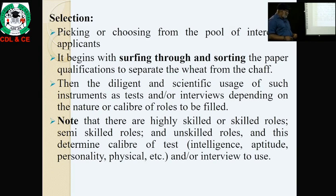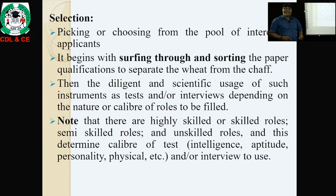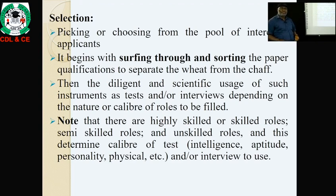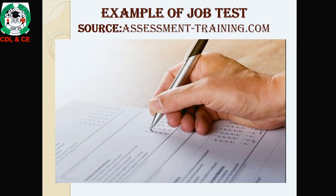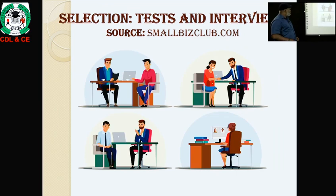Depending on the caliber of the role, the organization can decide to employ scientific methods such as tests and interviews. Organizations have highly skilled and experienced roles, skilled but less experienced roles, semi-skilled roles, and unskilled roles. Each requires different scientific methods for selection — such as intelligence tests, aptitude tests, personality tests, and physical tests, depending on the role to be filled.